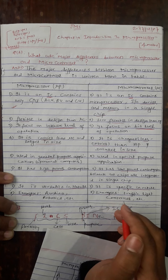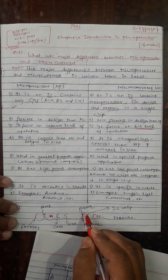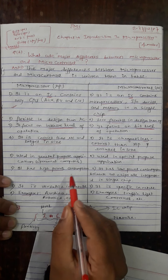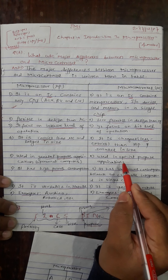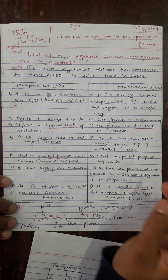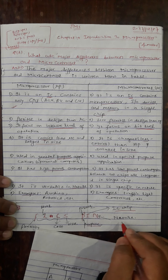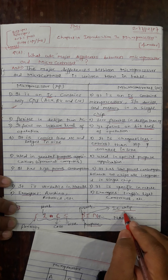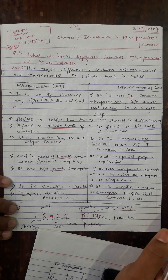In terms of purpose, a microprocessor is used in general purpose applications like personal computers, while a microcontroller is used in special purpose applications. In terms of nature, a microprocessor is versatile, whereas a microcontroller is specific in nature.